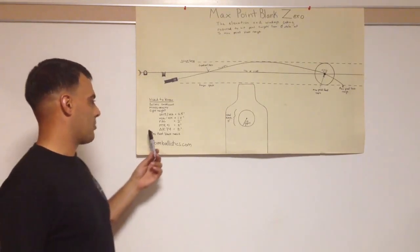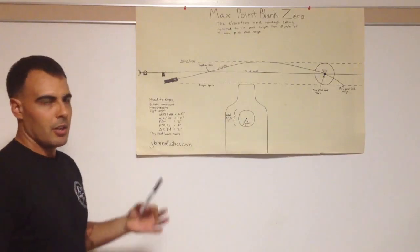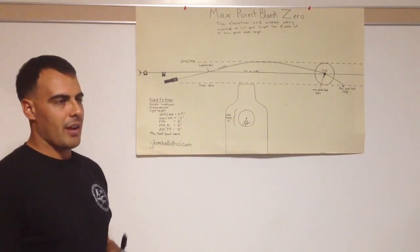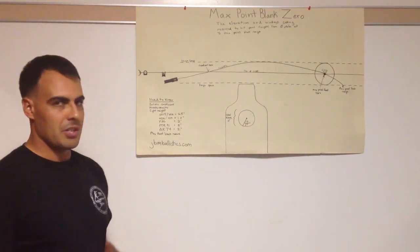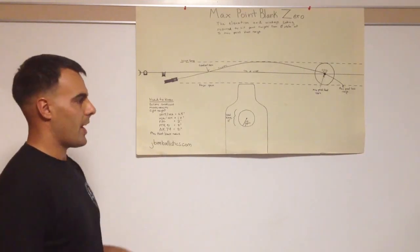We need to set our Max Point Blank radius, so mine's five inches because it's half of the vital zone. This is good for guns that have iron sights or optics that don't have an elevation compensator, a bullet drop compensator, or rear elevation settings. If you have fixed backup iron sights, this would be good for that.